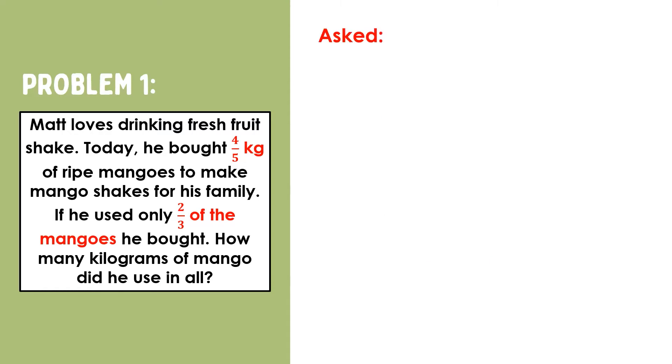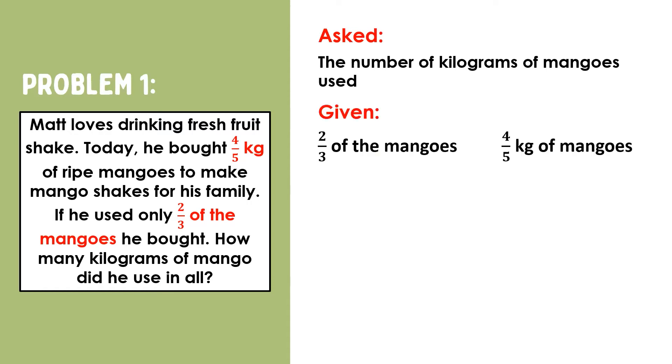Now, in this problem, we are asked to find the number of kilograms of mango Matt used for the fruit shakes. Then, we are given that he only used two-thirds of the mangoes he bought. And how many mangoes did he buy? He bought four-fifths kilogram of mangoes.